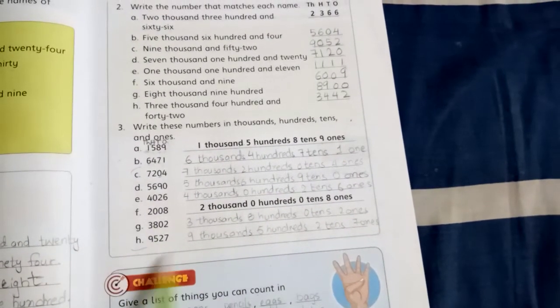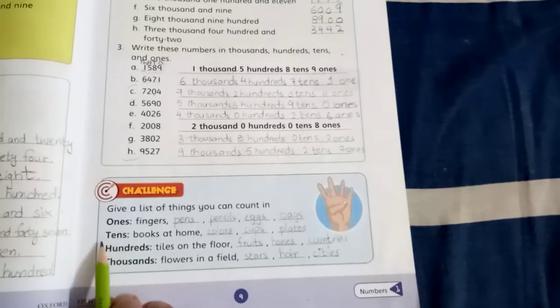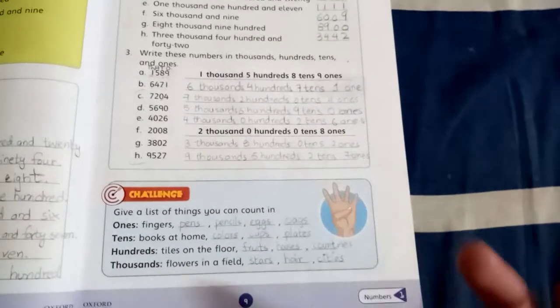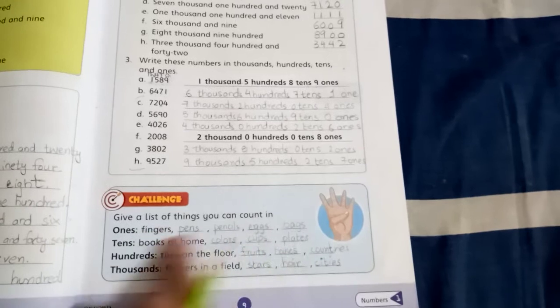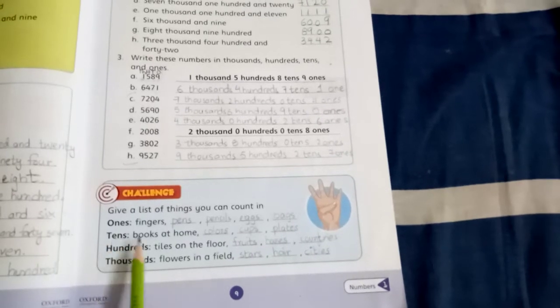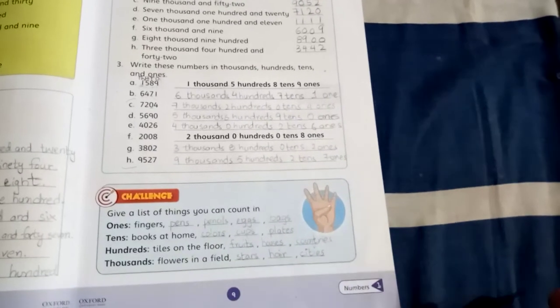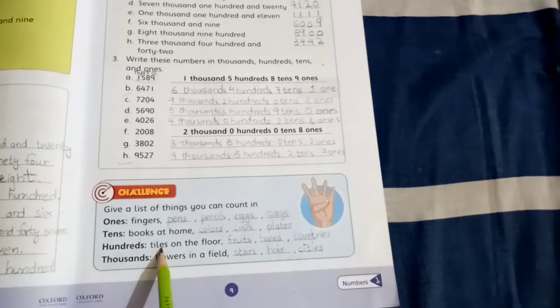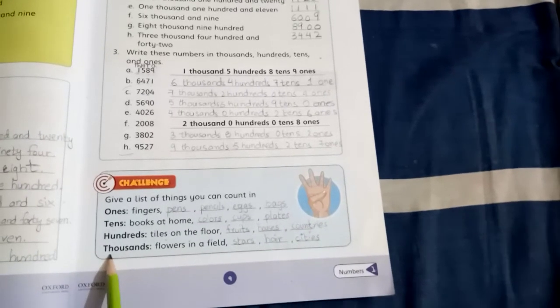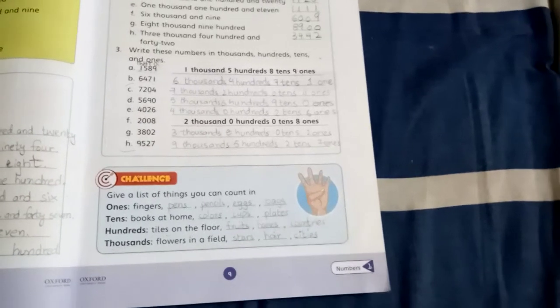D through H you will do yourself. Come to the next question, Challenge. Give a list of things you can count in ones, tens, hundreds, or thousands. For example, pens you can count, pencils, eggs, bags. How can you count in tens? Books at home, colors you can count in tens, cups, plates. You can count in hundreds: tiles, fruits, houses, countries. What about thousands? Flowers in fields, stars, hair, cities you can count in thousands.